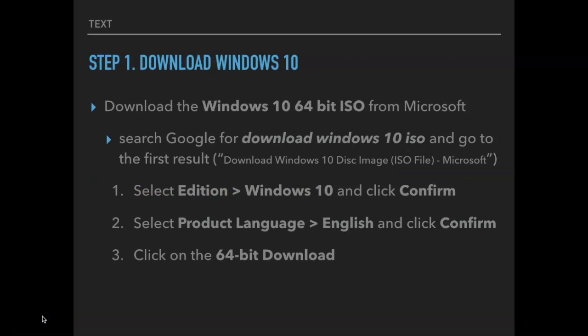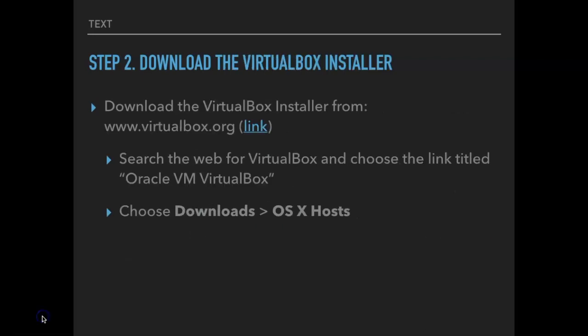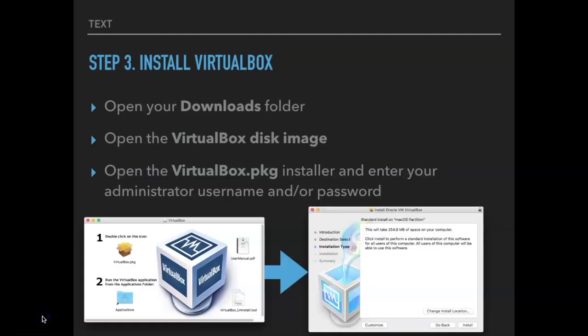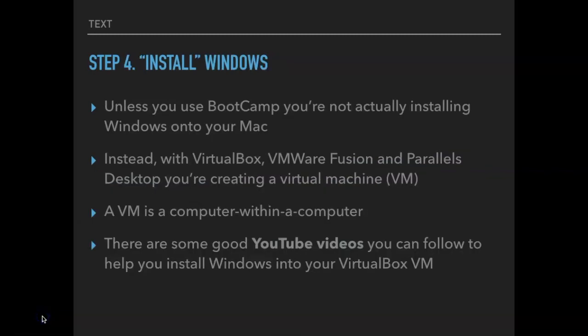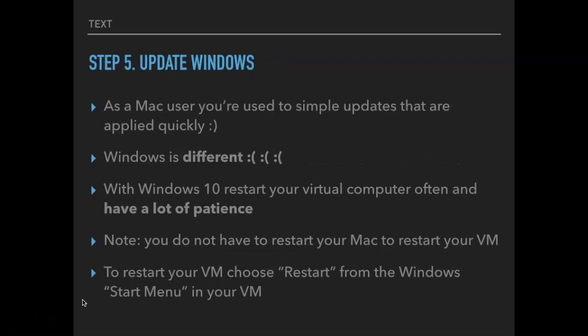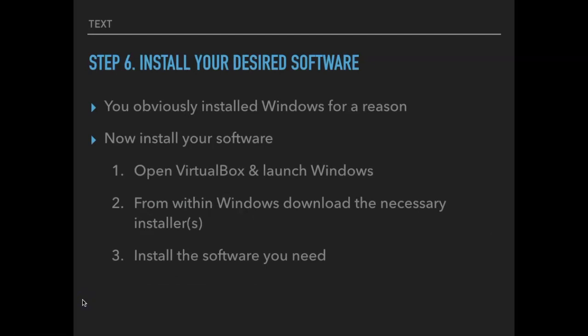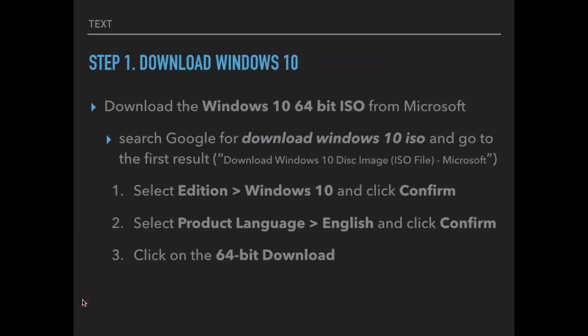Now let's get to the details. The first thing you need to do is download Windows 10. The second step is to download the VirtualBox installer. The third step is to install VirtualBox. Fourth, you install Windows into VirtualBox. The fifth step is to update Windows — this will take quite a while, by the way. And the final step will be to install your desired software.